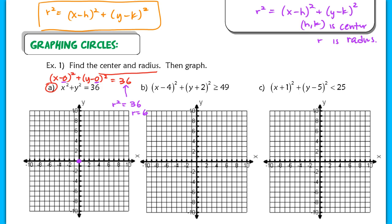To graph this, we go up 6 units, right 6 units, down 6 units, and left 6 units, then do our best to draw a circle through those points. That's how we graph our circle.